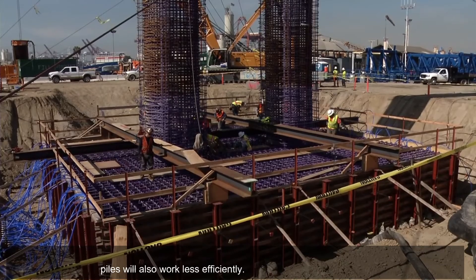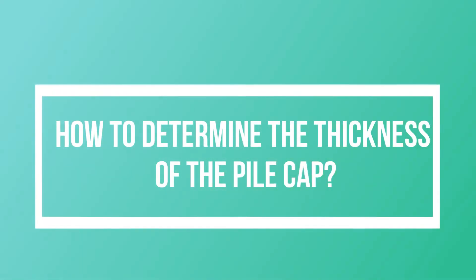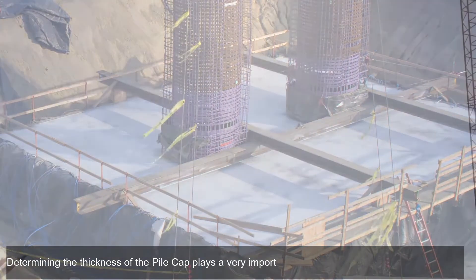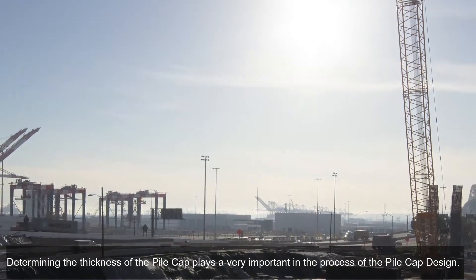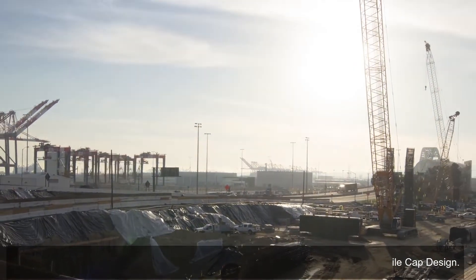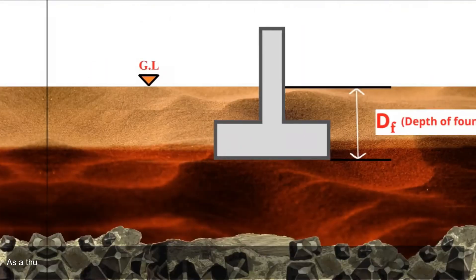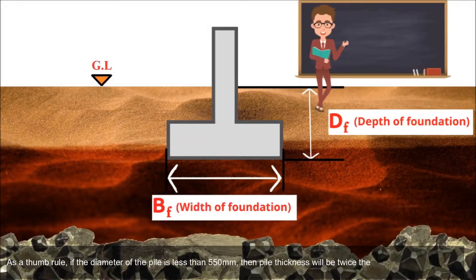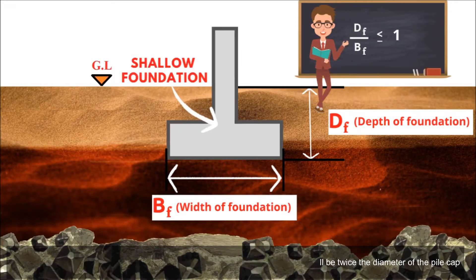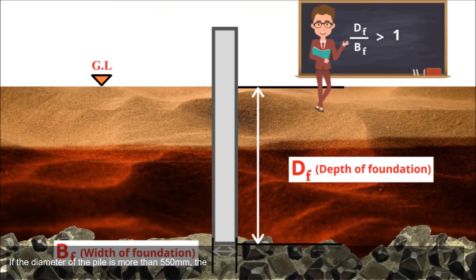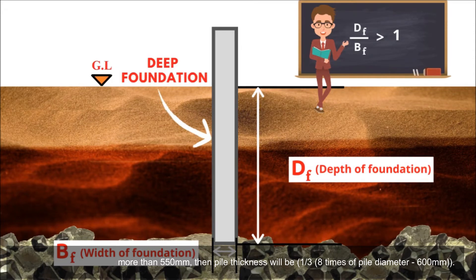Determining the thickness of the pile cap is very important in the pile cap design process. The thickness of the pile cap should be adequate enough to comply with the anchorage bond length parameters. As a rule of thumb: if the diameter of the pile is less than 550 millimeters, then pile cap thickness will be twice the diameter of the pile. If the diameter of the pile is more than 550 millimeters, then pile cap thickness will be 1.38 times the pile diameter minus 600 millimeters.